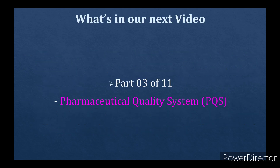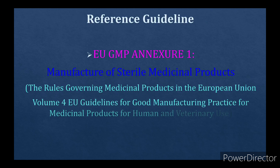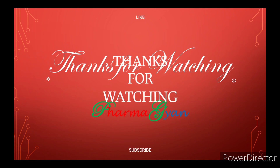Thanks for watching PharmaGyaan. In our next video we will discuss Part 3 of 11 — Pharmaceutical Quality System (PQS). The reference guideline used to prepare this video is EUGMP Annex 1 — Manufacture of Sterile Medicinal Products, The Rules Governing Medicinal Products in the European Union, Volume 4, EU Guidelines for Good Manufacturing Practices for Medicinal Products for Human and Veterinary Use. Please don't forget to like, share and subscribe our channel PharmaGyaan. Thank you.